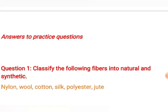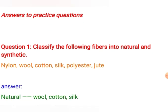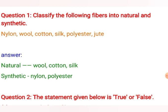Now it is time for the practice questions. The first question: classify the following fibers into natural and synthetic — nylon, wool, cotton, silk, polyester. Wool, cotton, and silk are natural fibers because they are obtained from natural sources: wool from goats, cotton from cotton plants, and silk from the silkworm. Nylon and polyester are synthesized by man using chemicals, so they are classified as synthetic fibers.